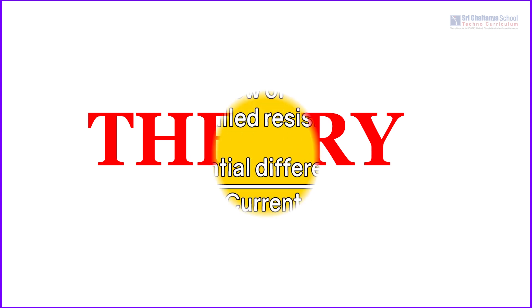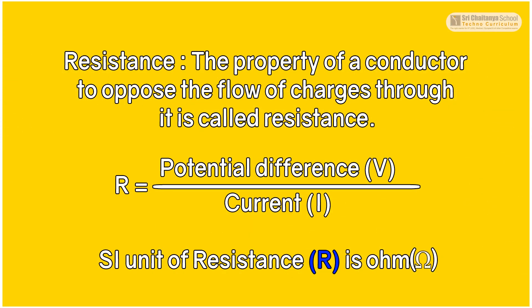The theory of this experiment is: Resistance — the property of a conductor to oppose the flow of charges through it is called resistance. R is equal to potential difference divided by current.